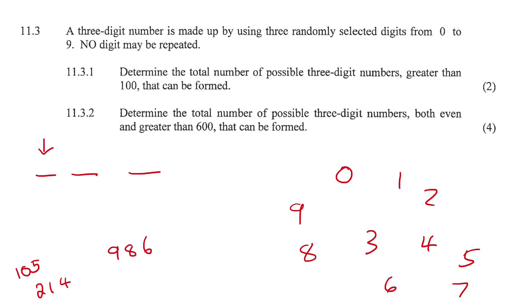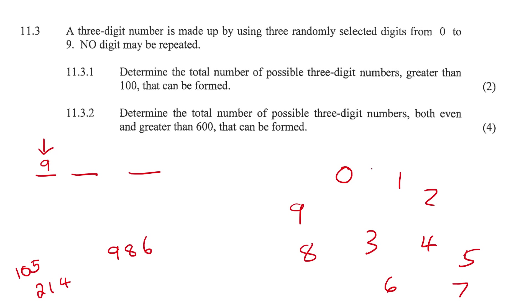For position one, you could use the numbers one through nine - so how many options is that? That is nine different options, because there are ten numbers available and you just can't use zero.